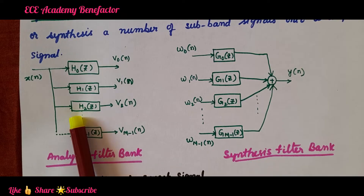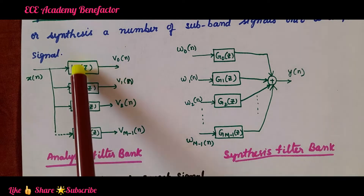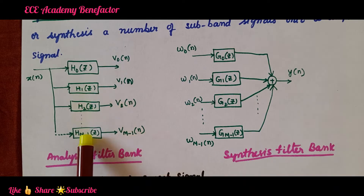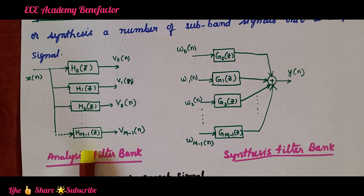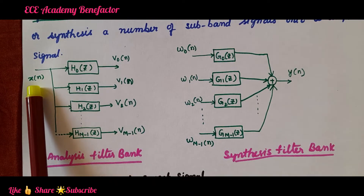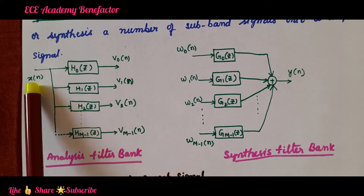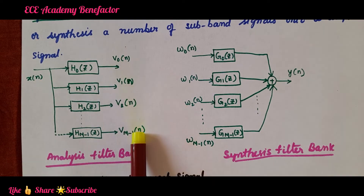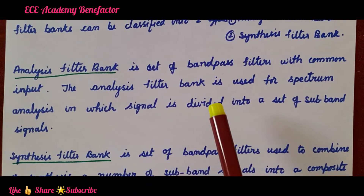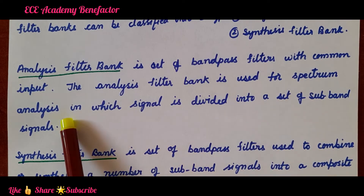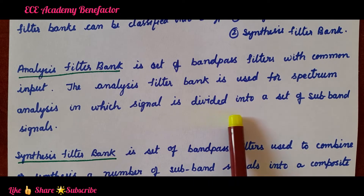The analysis filter bank is a set of band pass filters with a common input. It is used for spectrum analysis, in which the signal x(n) is divided into a set of sub band signals. The input signal is divided into sub band signals by the analysis filter bank.